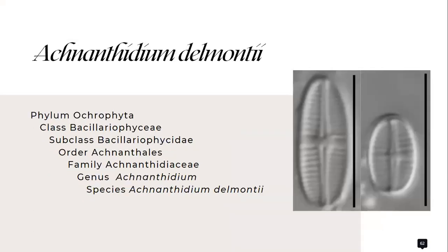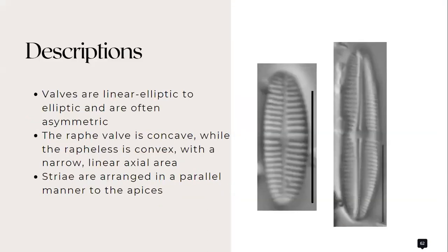As for Achnanthidium delmontii from the family Achnanthidiaceae, it has these descriptions that valves are linear to elliptic and are often asymmetric.